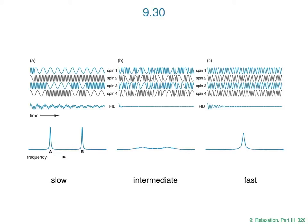In the fast exchange limit, each spin is jumping so quickly between the two environments that rather than completing several cycles at one frequency, it only does a fraction of a cycle before jumping again. The individual signals look slightly jagged but are more or less at a single frequency. When you add them all up, you get a nice free induction decay that transforms to a single narrow peak. This visualizes the slow, intermediate, and fast exchange regimes by thinking about the behaviour of individual spins jumping slowly, more quickly, and then very quickly indeed.